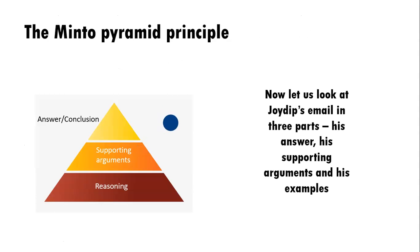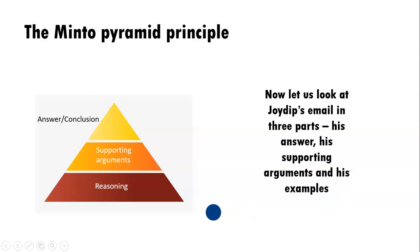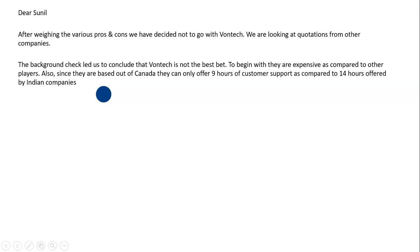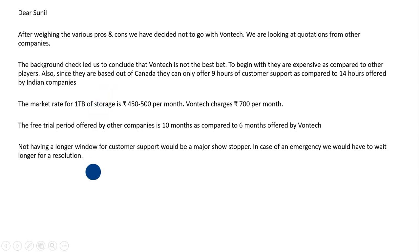Now let's analyze Joydeep's email and how he followed the pyramid principle. We'll look at it in three parts: his answer, his supporting arguments, and his examples. In the very first line, Joydeep has given the answer or conclusion — he let Sunil know they will not be going ahead with OneTech. Sunil immediately knows the outcome. Joydeep then follows up with supporting arguments, giving reasons why they won't go ahead with OneTech, and then follows with the third part of the pyramid: the reasoning and data.